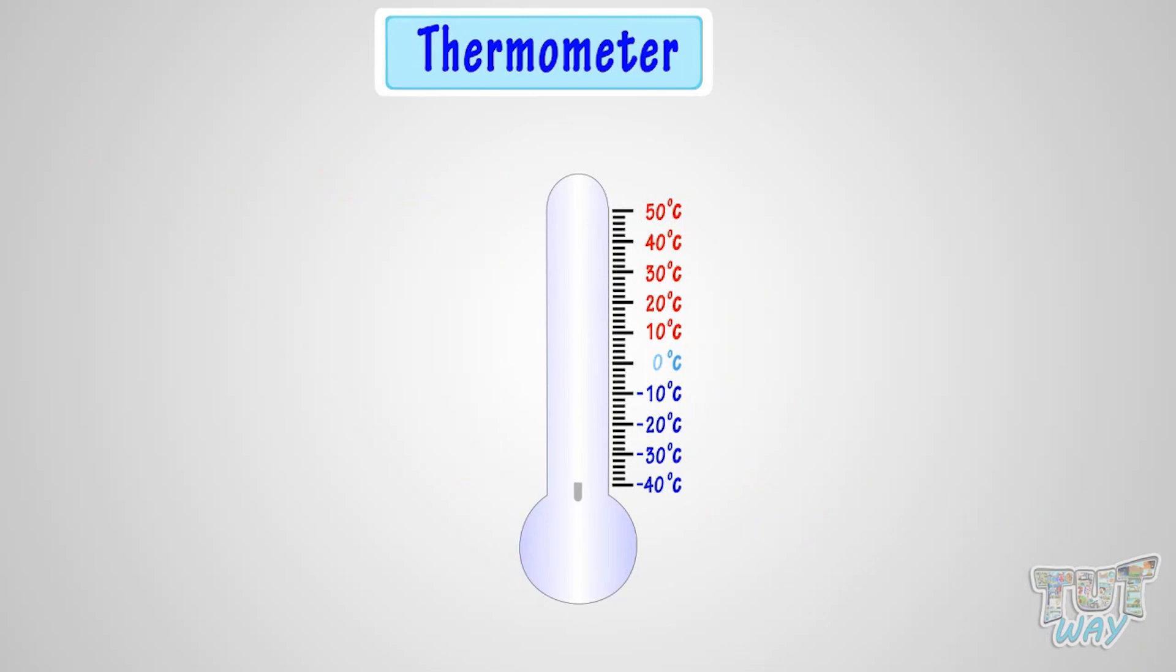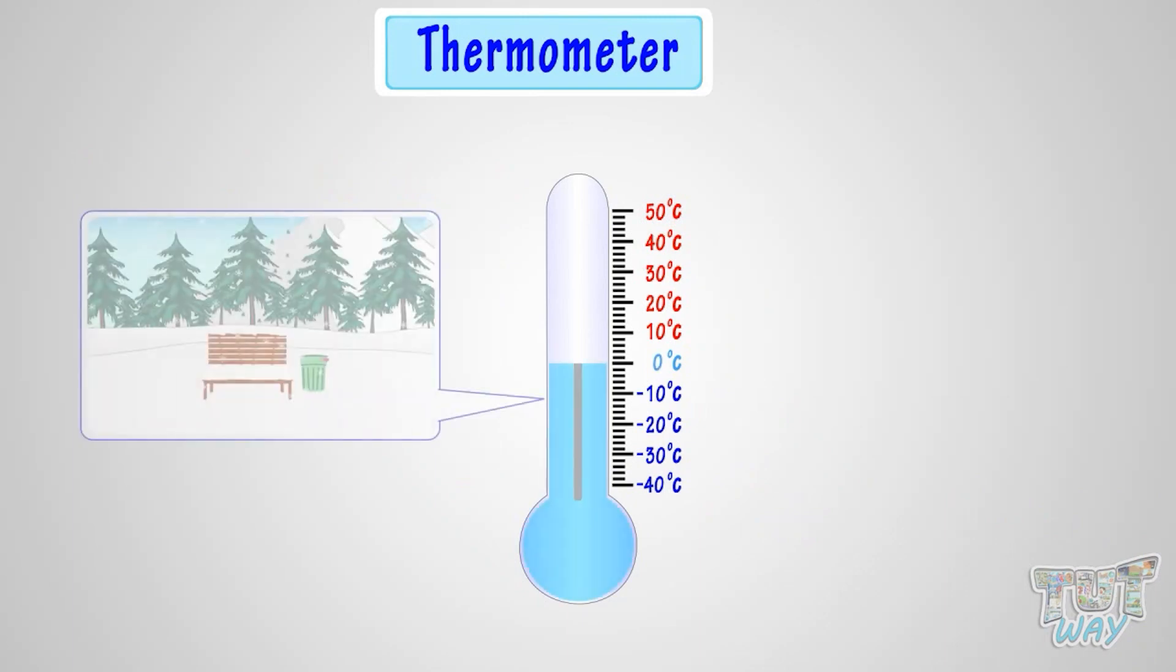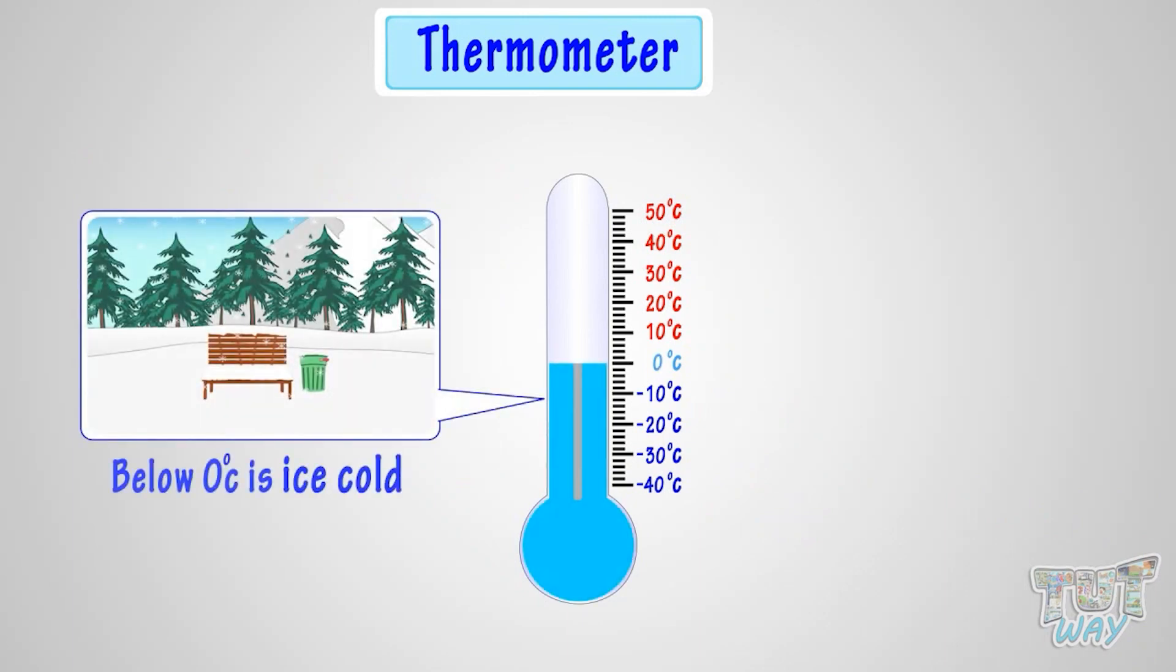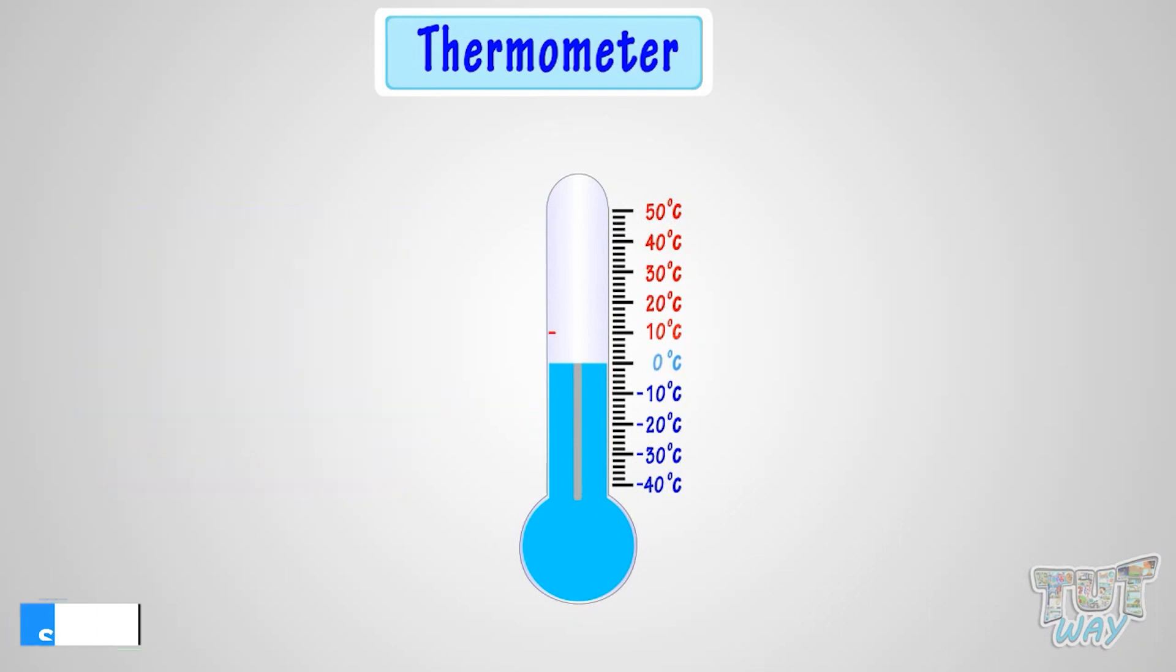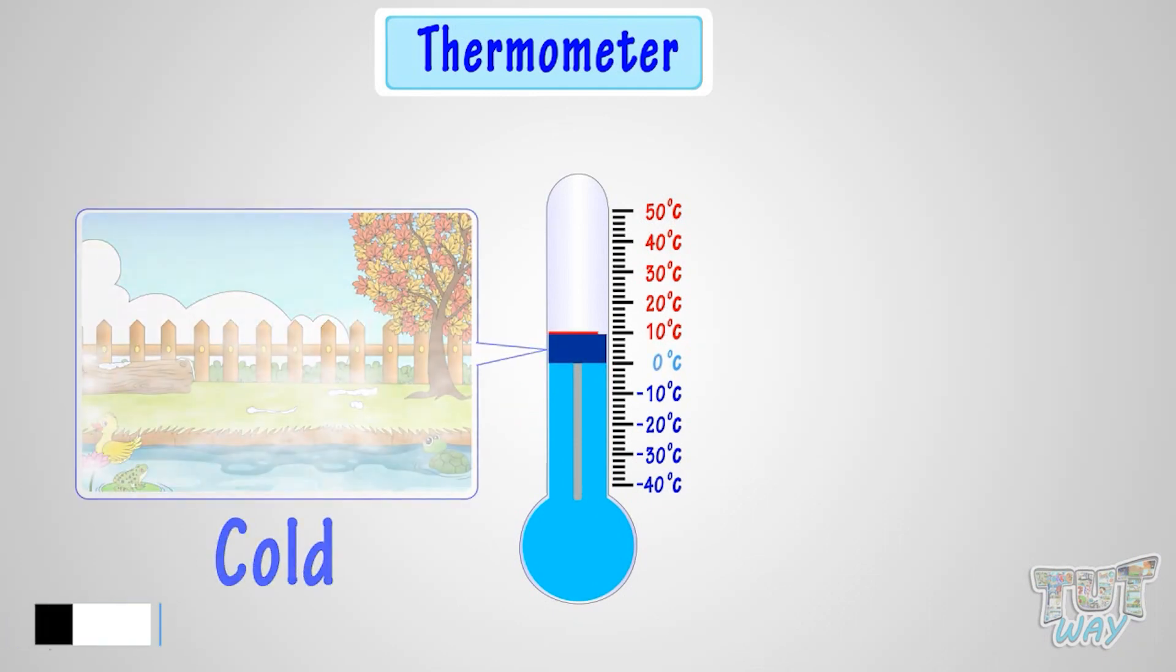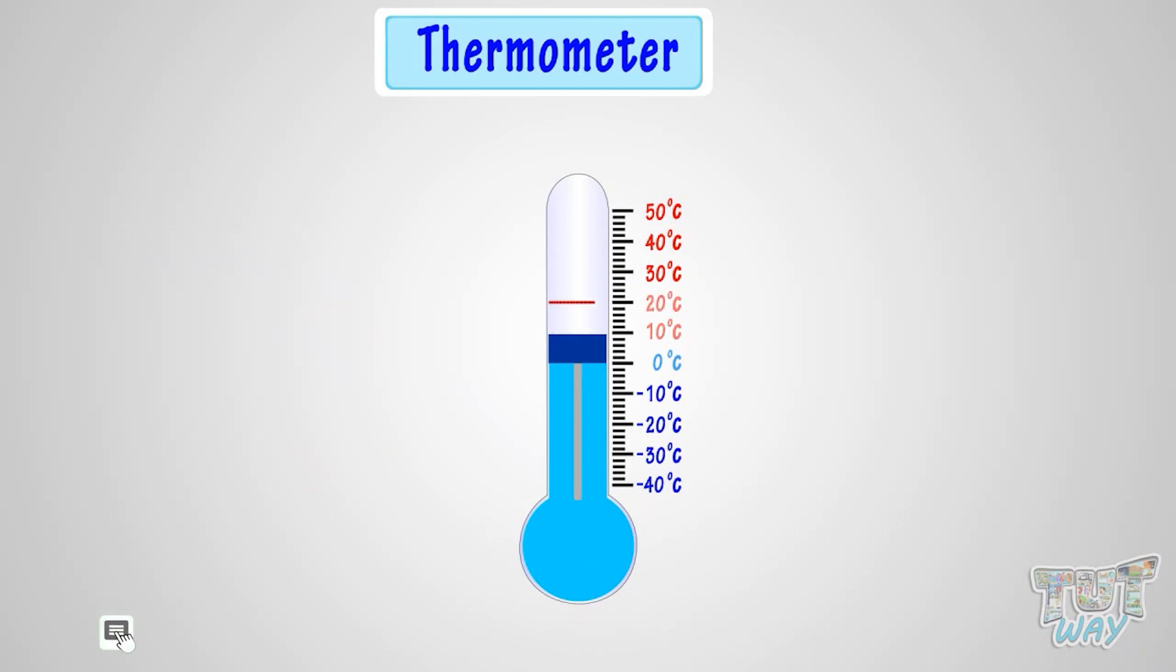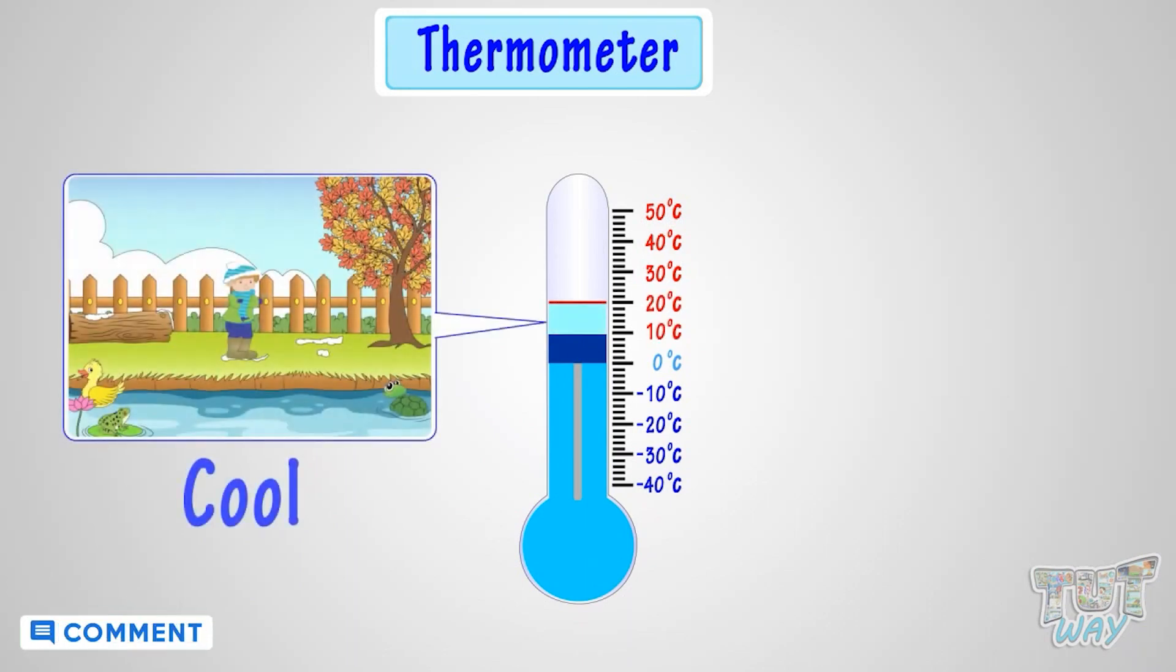Below 0 degrees Celsius or temperature in minus is very, very cold or ice cold. 0 to 10 degrees Celsius is cold. 10 to 20 degrees Celsius is cool.